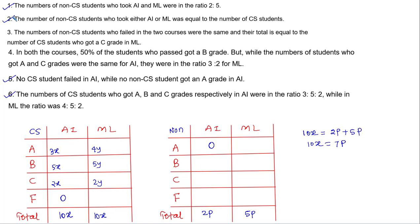Statement 3 says the number of non-CS students who failed in the two courses were the same, and their total equals the number of CS students who got a C grade in ML, which is 2y. So the number of non-CS students who failed in AI is Y, and in ML is Y, with their total being 2Y equal to 2y.